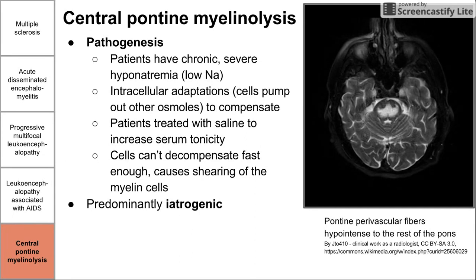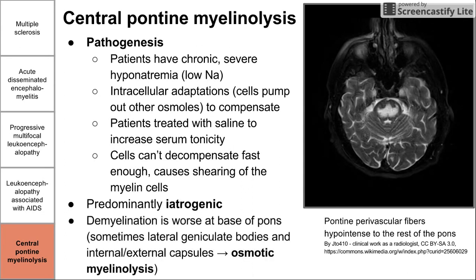Central pontine myelinolysis is predominantly iatrogenic — caused by providers. Demyelination is worst at the base of the pons, which is why it has its name. It can also affect the lateral geniculate bodies, as well as the internal and external capsules — crucial white matter strands deep in the brain. If it affects other parts of the brain besides the pons, it is called osmotic myelinolysis. This has been a summary of five diseases that cause demyelination.